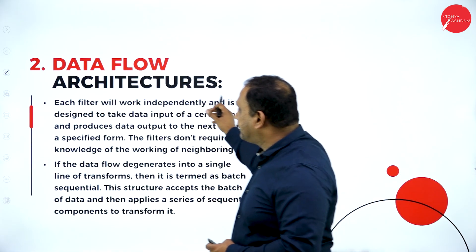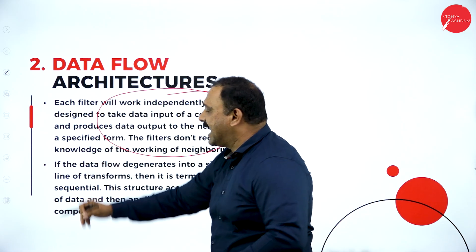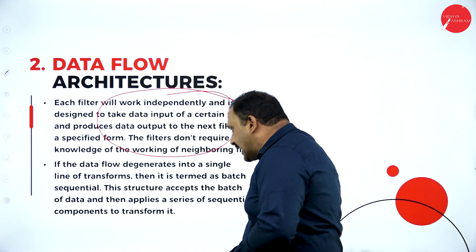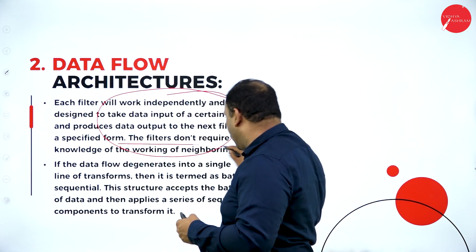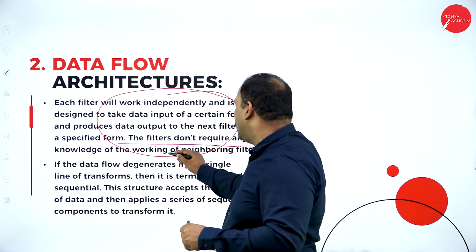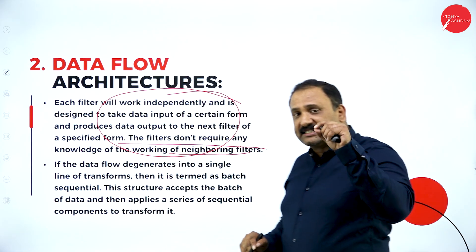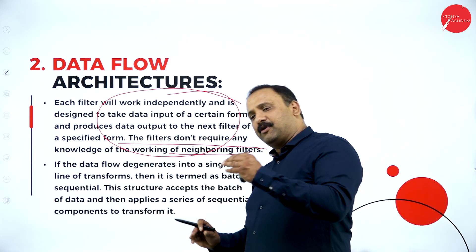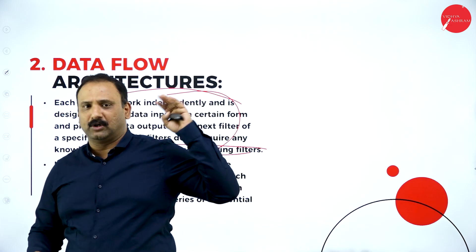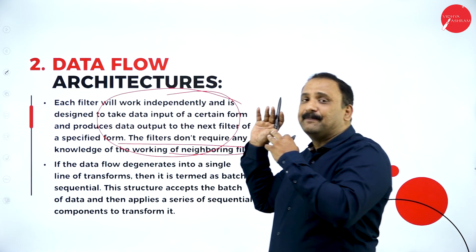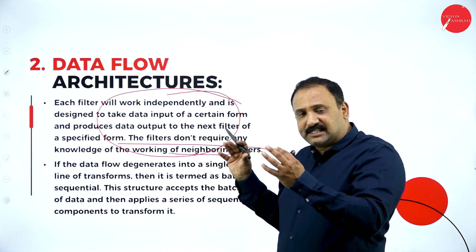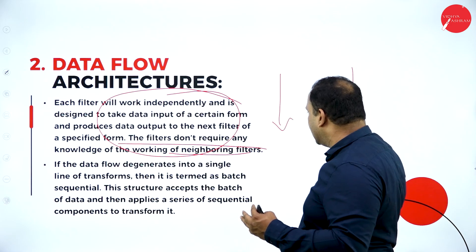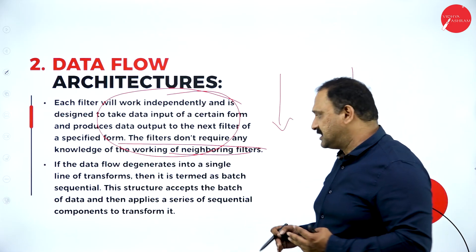In a data flow architecture, each filter works independently and is designed to take data input of a certain form and produce data output to the next filter in a specified form. Filters don't require any knowledge of the working of neighboring filters. When you are inputting data in the form of numbers, alphabets, or alphanumeric values, it will automatically produce the output. The filters are not going to worry about other files running through — they will automatically perform the transformation and give the respective output.